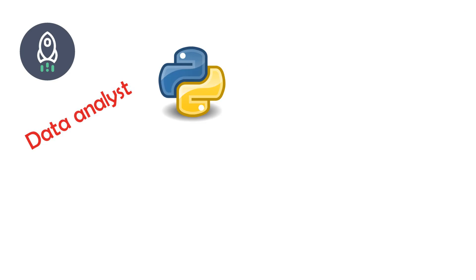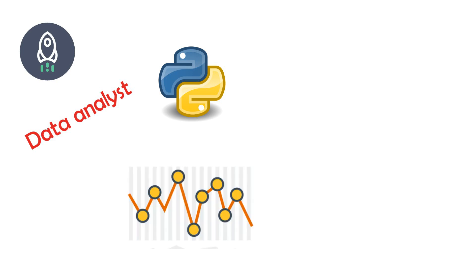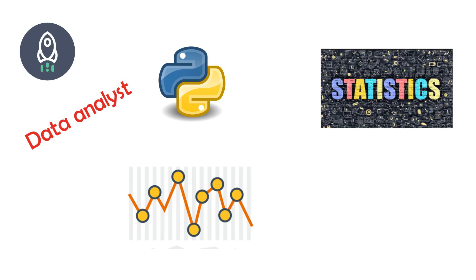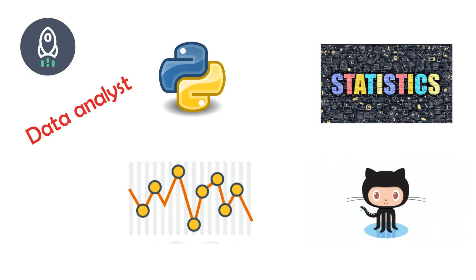Data analyst and data scientist tracks are both similar at the basic level. They consist of basic and intermediate programming concepts in Python, how to clean and visualize data, probability and statistics for data analysis, and collaboration tools like Git and SQL databases.